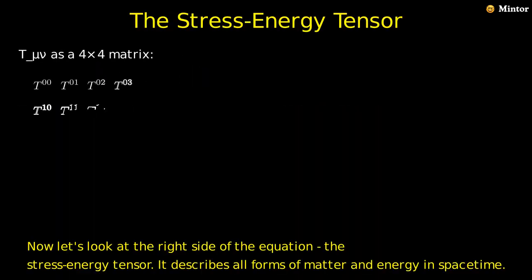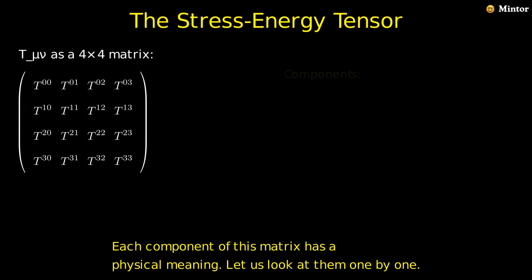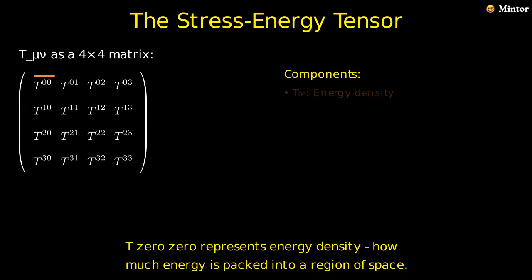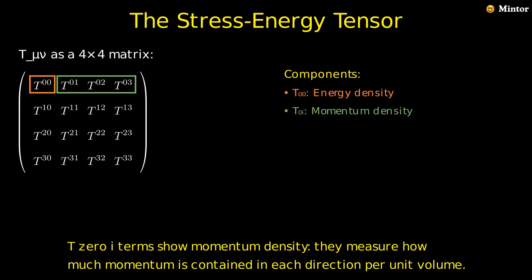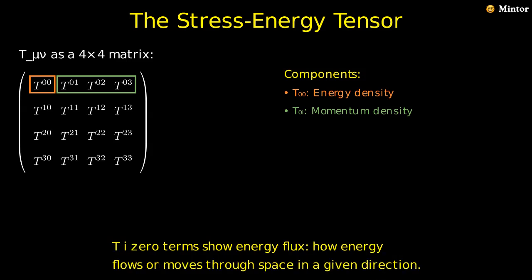Now let's look at the right side of the equation, the stress-energy tensor. It describes all forms of matter and energy in spacetime. Each component of this matrix has a physical meaning. Let us look at them one by one. T_00 represents energy density, how much energy is packed into a region of space. T_0i terms show momentum density. They measure how much momentum is contained in each direction per unit volume. T_i0 terms show energy flux, how energy flows or moves through space in a given direction.